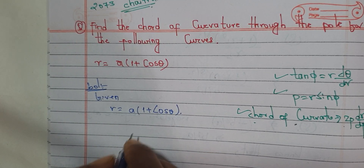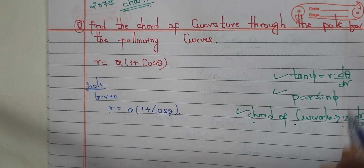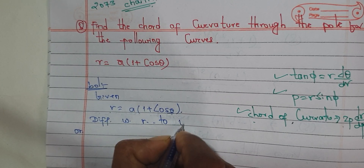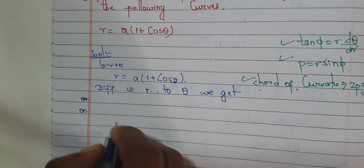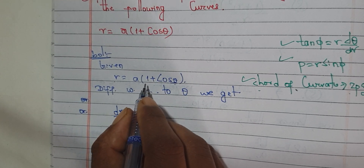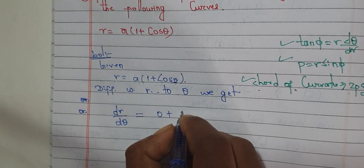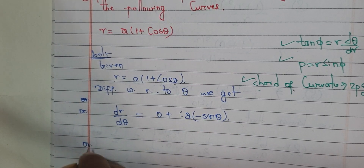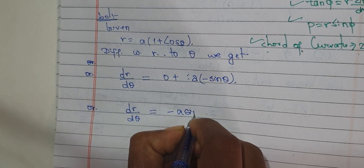We have r = a(1 + cos θ). Differentiating with respect to θ: dr/dθ is equal to minus a sin θ.